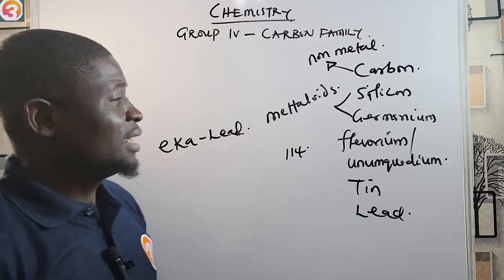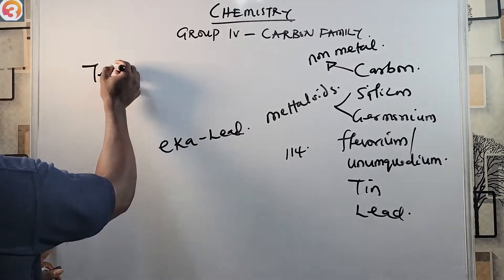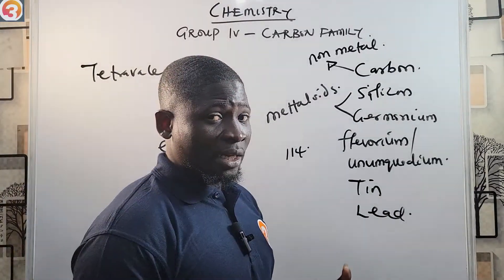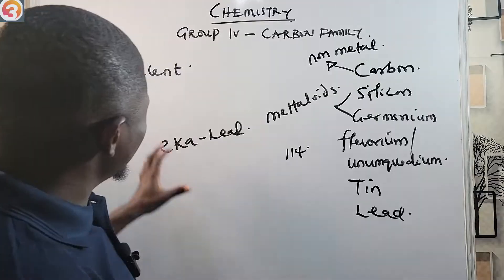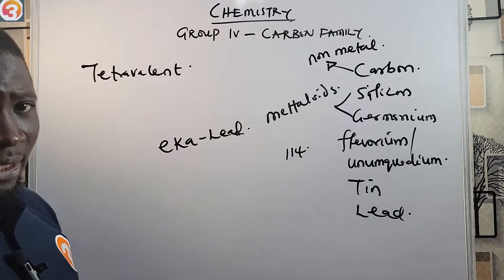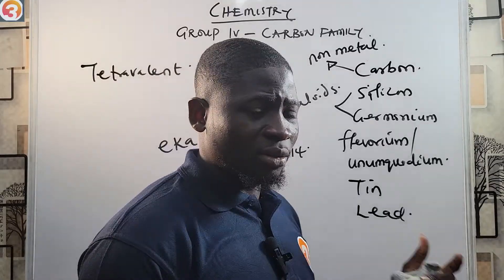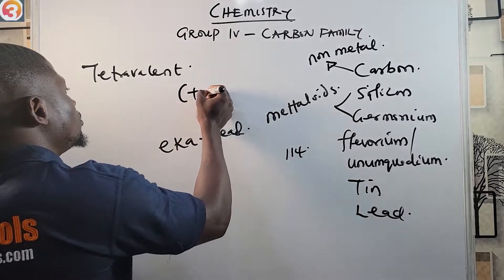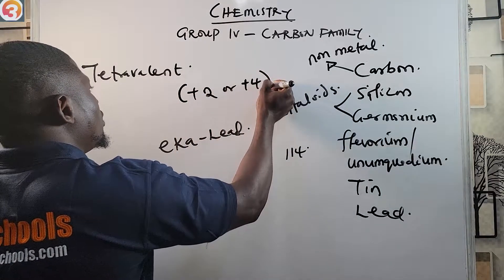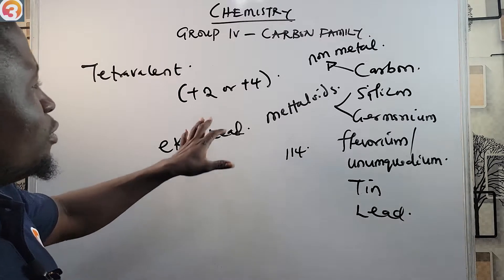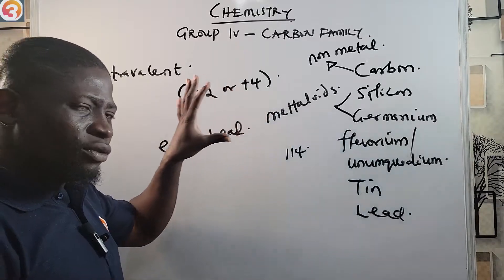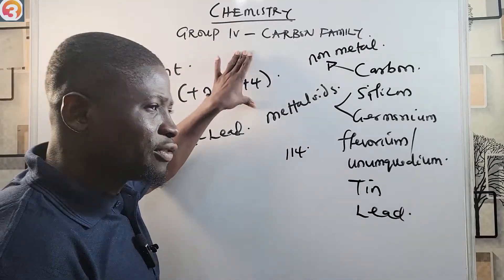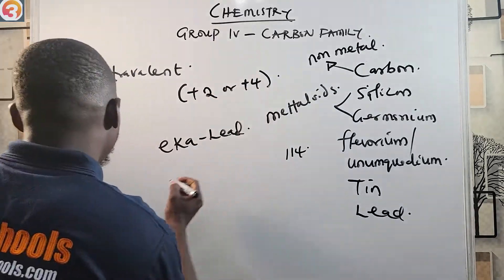The first important thing to know about Group 4 elements is that they are tetravalent — they have four valence electrons. Because they are tetravalent, they have two oxidation states in compounds: they can exist as either +2 or +4 in their compounds.